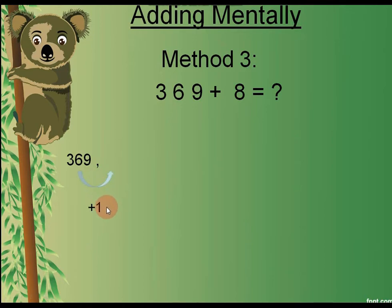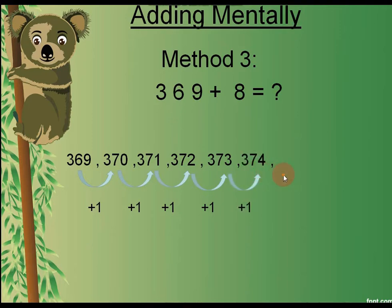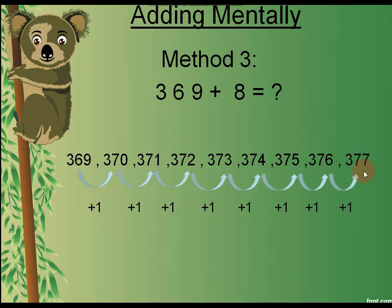369 plus 1 makes 370, then 371, then 372. We continue this process till the eighth step: 373, 374, 375, 376, 377. So here we have counted on from 369 for eight steps to reach the answer, which is 377.